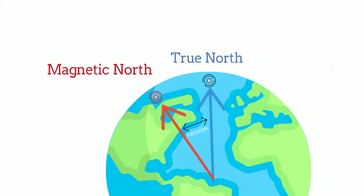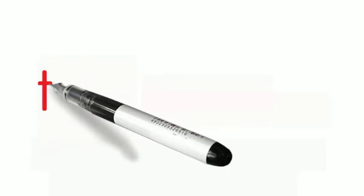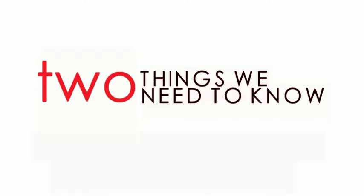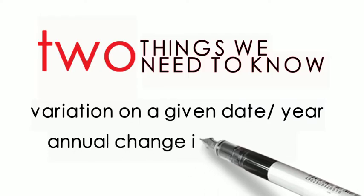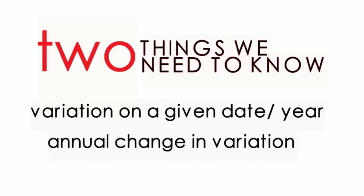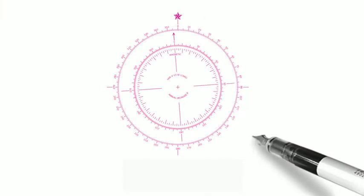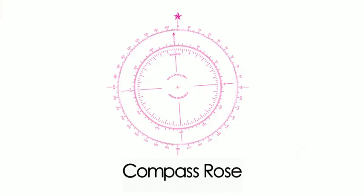So, how do we calculate magnetic variation? All charts have the necessary information to calculate the variation appropriate for the area. There are two things that we need to know when calculating a magnetic variation: one, the variation on a given date or year; and two, the annual change in variation. These two pieces of information can be found on the compass rose. The compass rose is colored in magenta and usually found somewhere on the edge of a chart or map. In the compass rose, the information that we need is written along the arrow.